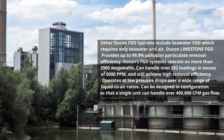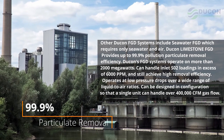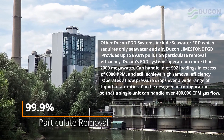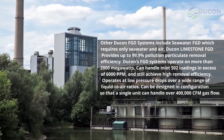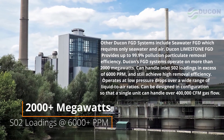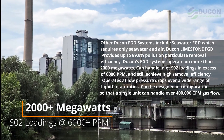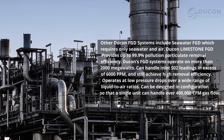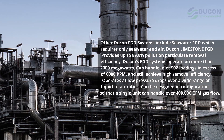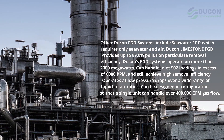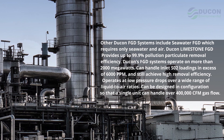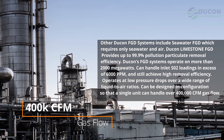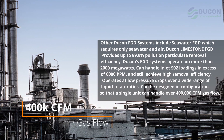Dukon's limestone FGD provides up to 99.9% particulate removal efficiency. Dukon's FGD systems operate on more than 2,000 megawatts, can handle inlet SO2 loadings in excess of 6,000 ppm while still achieving high removal efficiency, operate at low pressure drops over a wide range of liquid to air ratios, and can be designed so that a single unit handles over 400,000 CFM gas flow.